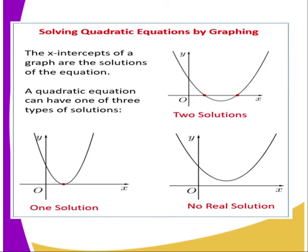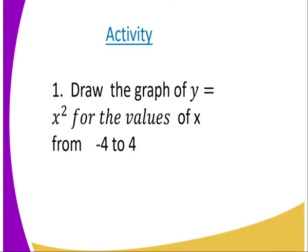In our previous lesson when we used the quadratic formula, we said there are three types of solutions. First: one solution — a perfect quadratic. Second: two solutions — non-perfect quadratic equations. Third: no real roots — this means the value under the square root in the quadratic formula is less than zero, meaning the equation doesn't have real roots.